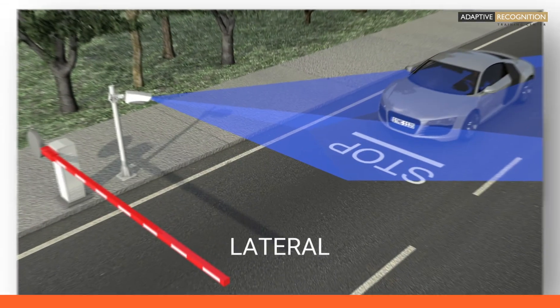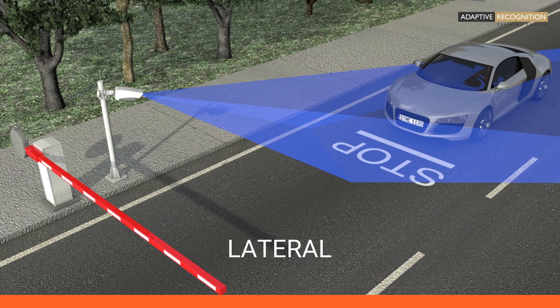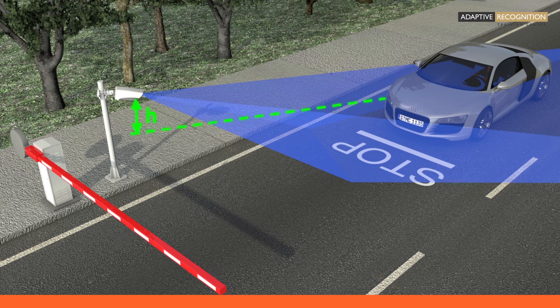The lateral position is typically used in access control like gated parking, borders, and stop-and-go tolling. In case of lateral camera position, the height of the setup is measured from the headlight of the car. The optimal camera position is when it is placed at least one meter above the headlight, which ensures the beam from the headlight does not hit the front of the camera directly.